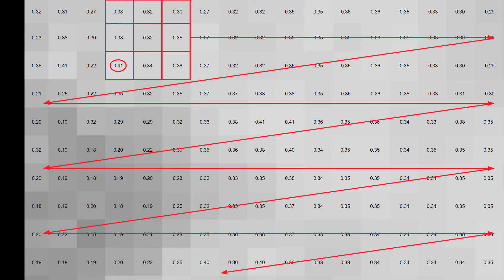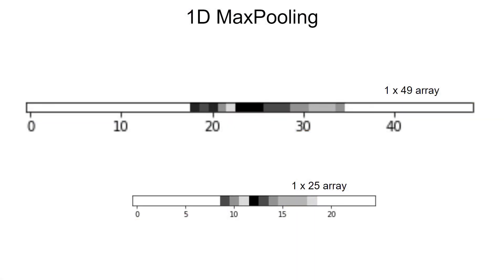This process continues for the whole image. Because we're working with one-dimensional arrays as output from our convolution step, we can use one-dimensional max pooling. A window is applied over a subset of pixels in the array, the maximum value is stored, and the pool slides over, repeating for the whole array. In Edge Impulse, the default window size is 1 by 2 pixels with a hop of 2 pixels, creating an array half the size of the original. If there are an odd number of pixels, Edge Impulse pads an extra zero to prevent dropping values — that's how we get an output of 25 pixels from an input of 49.